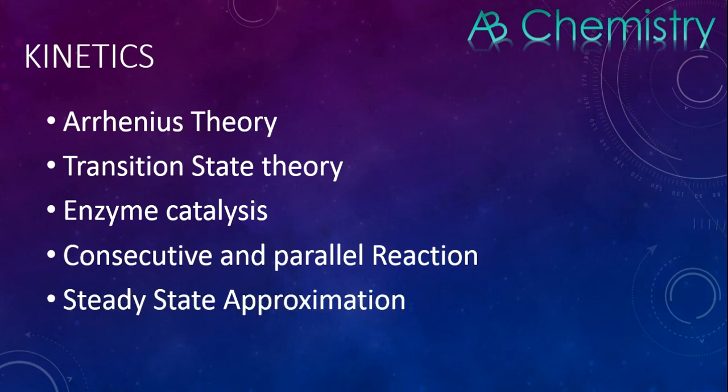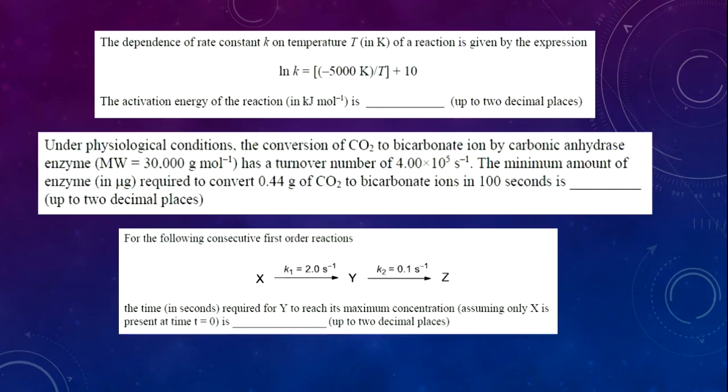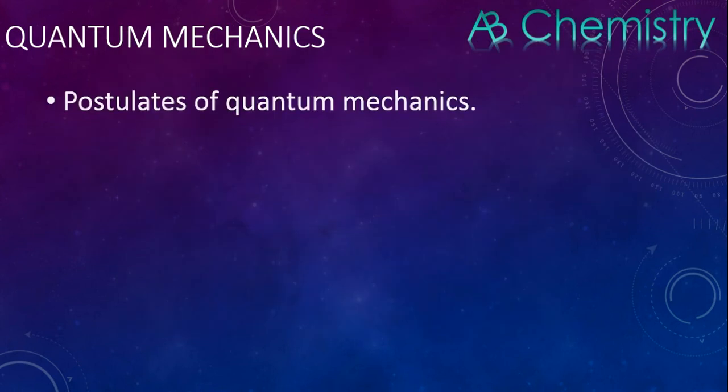The first question shows the dependence of the rate constant on temperature T, which is basically from the Arrhenius equation. The second question is about the turnover number based on enzyme kinetics. It's pretty simple if you know the equation. The third one is consecutive reactions, which is also simple.